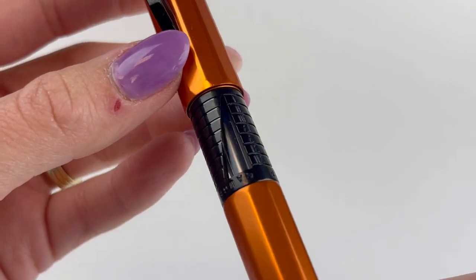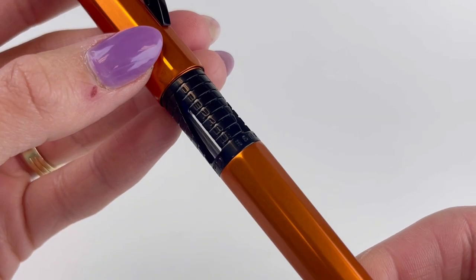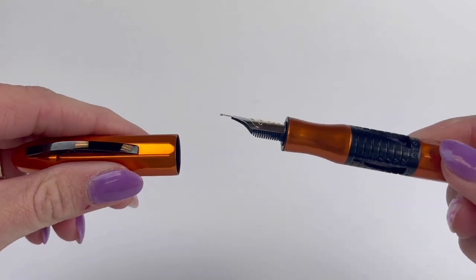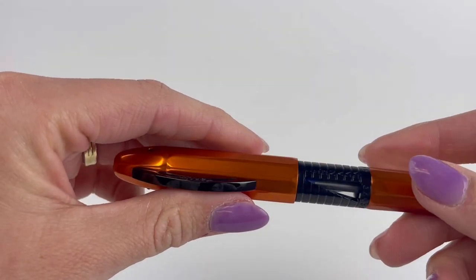It does come with the redesigned word gauge ink viewing window here with deep laser engraving for the Roman numerals to indicate the number of words that you still have left to write with the ink in your pen.